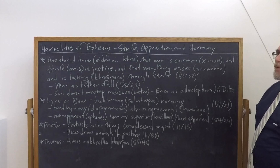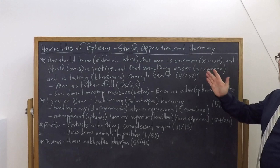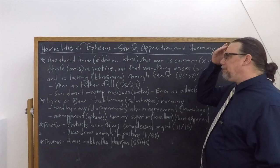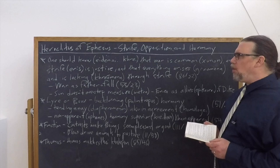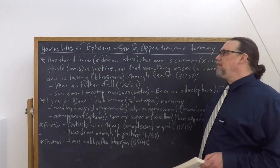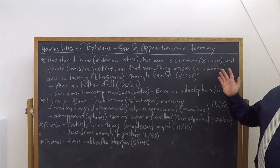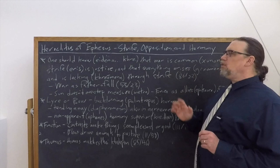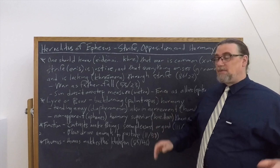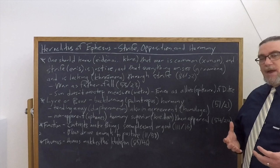He tells us that one should know that war is common, that strife is justice, and that everything arises and is lacking through strife. So this is a rather blanket statement covering a lot. It's saying that one ought to know something about the nature of the universe, about the nature of human relations, about reality, perhaps even about oneself.